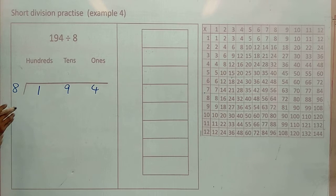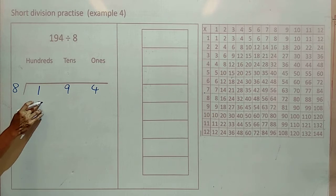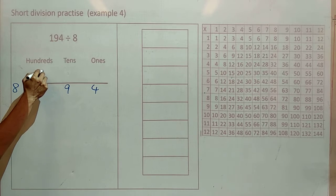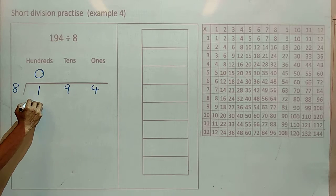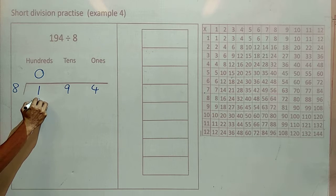First thing you notice, no 8s can go into 1. So we have 0. So we have a remainder of a group of 100,